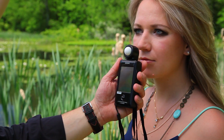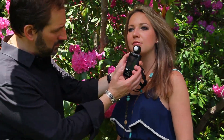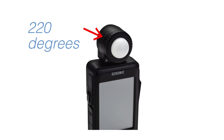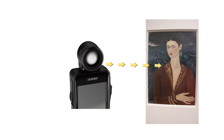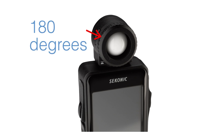Incident mode is ideal for shooting situations when we can get close to our subject and measure the light as it falls on the subject. If you're shooting a portrait or three-dimensional object, the lumisphere should be in the upright position — it will measure 220 degrees of light falling on the subject, which is especially important because it measures the light wrapping around the subject. If you're measuring a subject that is two-dimensional, you can reposition the lumisphere in the retracted position and the L478 will only measure 180 degrees of the light.